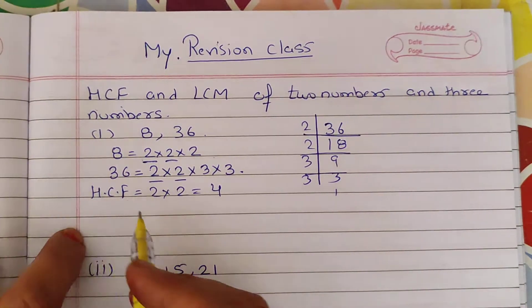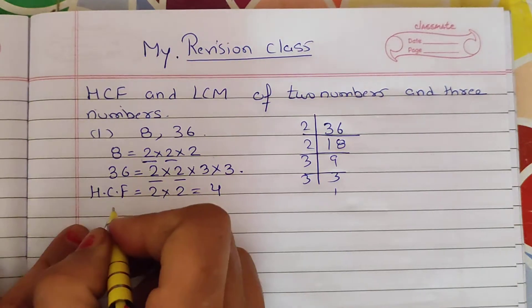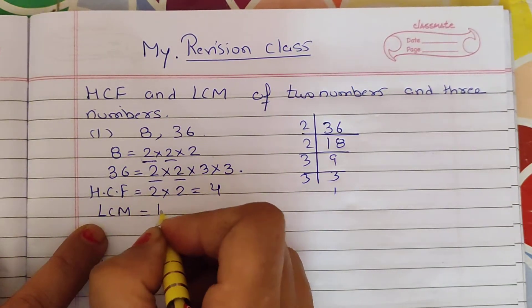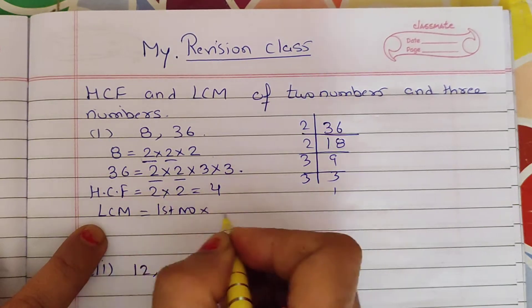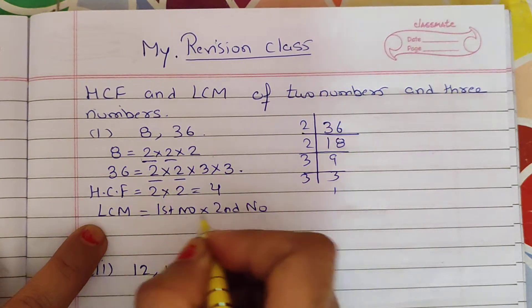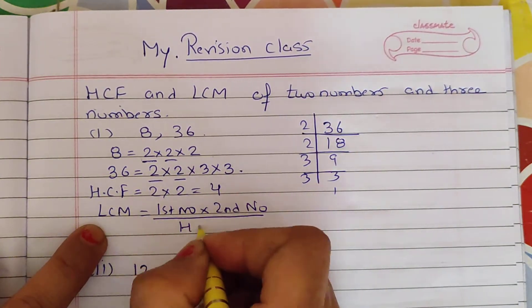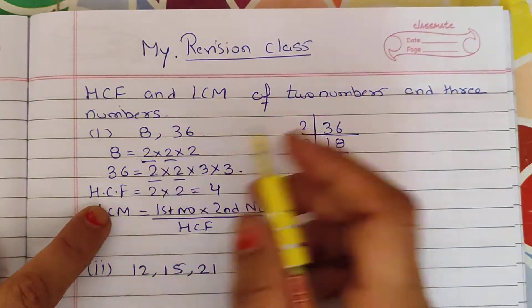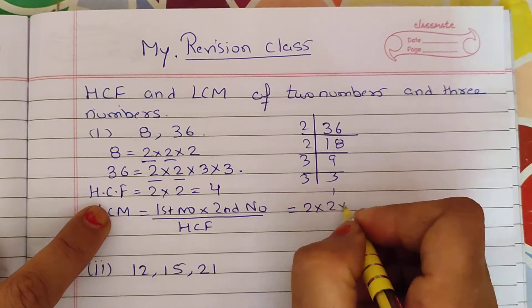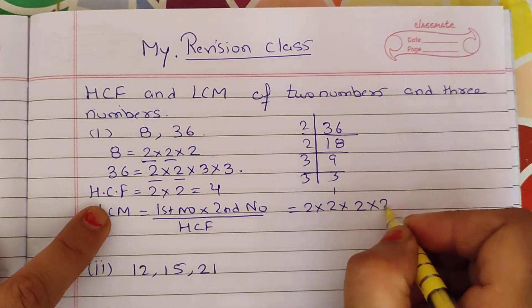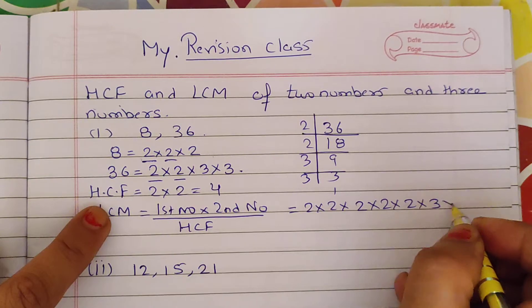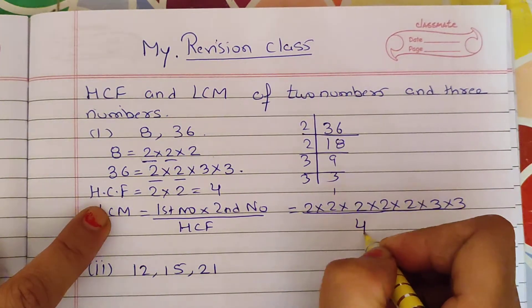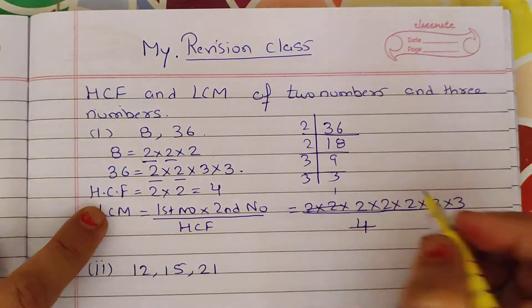If we find LCM, we have to find out the first number multiplied by second number divided by HCF. We can use this concept. What are the factors? 2 into 2 into 2. What are the factors? 2 into 2 into 3 into 3 divided by HCF. HCF is 4.